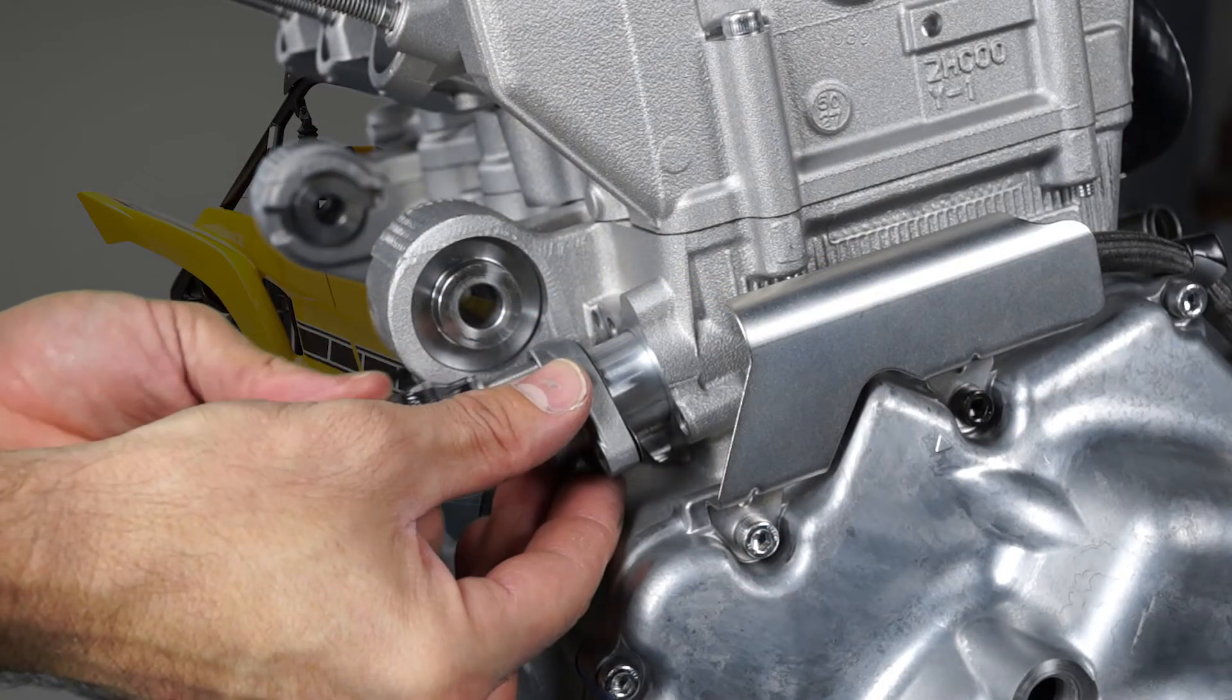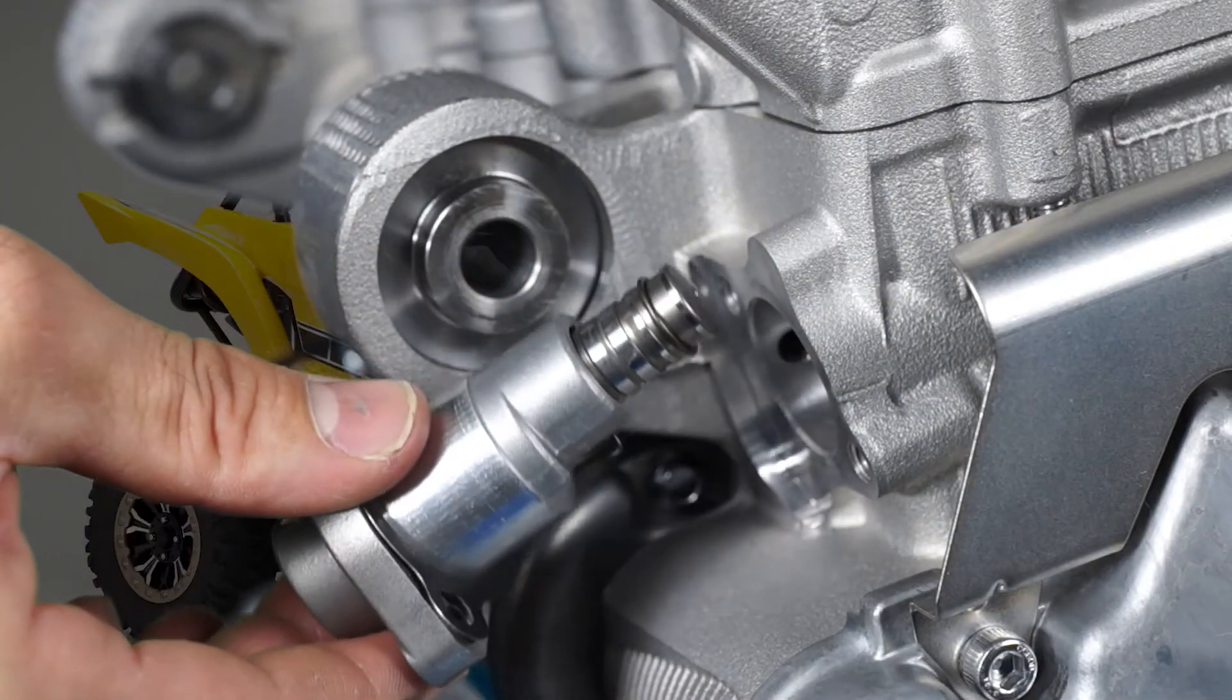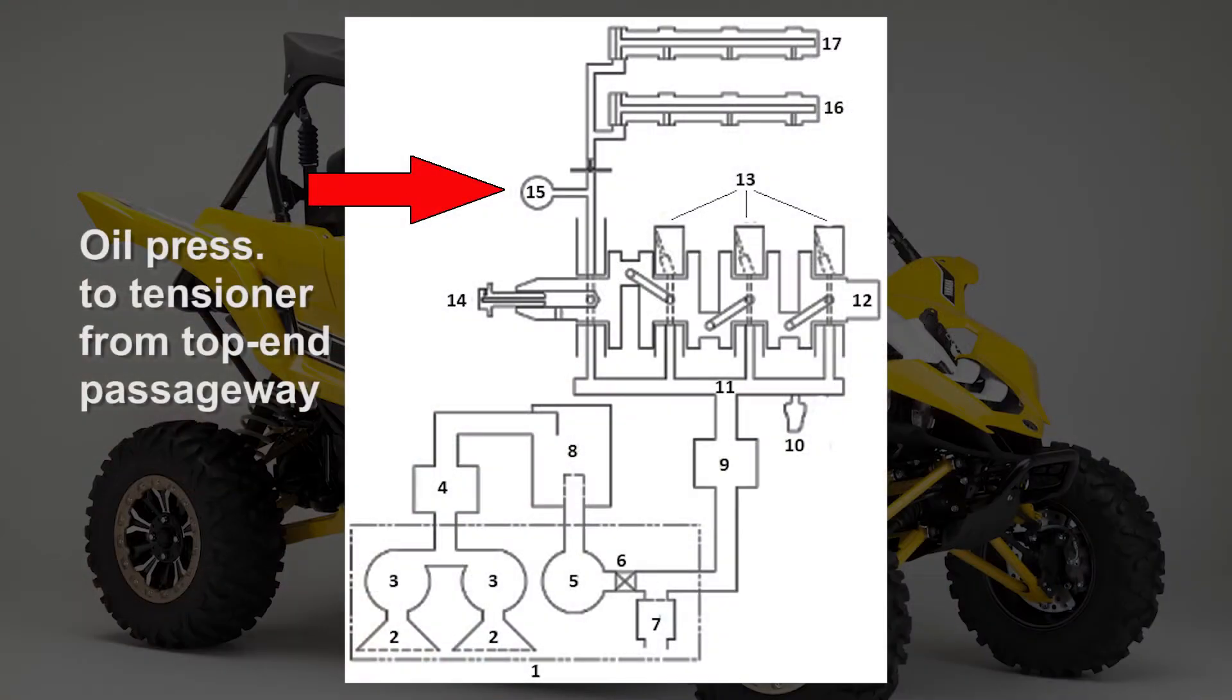The timing chain tensioner on the YXC-1000R is a newly designed self-adjusting hydraulic tensioner which is pressurized with engine oil when the engine is running.